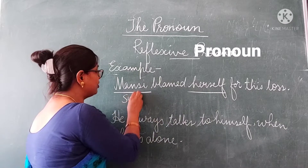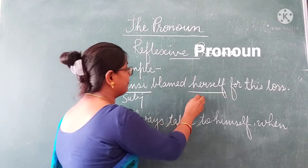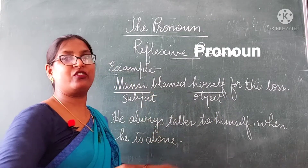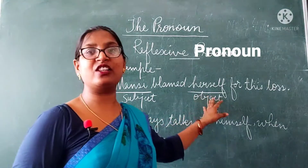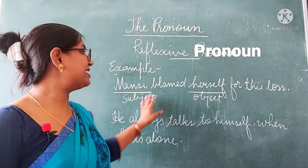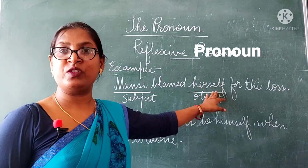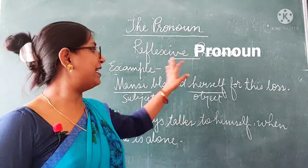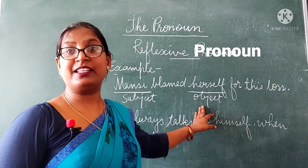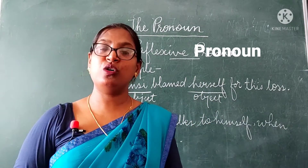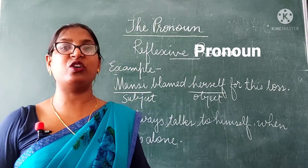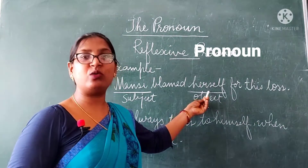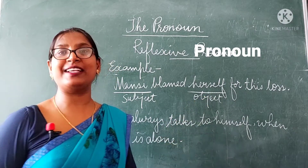Mansi is the subject and "herself" is the object. In this sentence you can see that the subject and the object are the same person. Mansi blamed herself — the action started and was performed by Mansi, and it was also received by Mansi. So the performer and the receiver of the action is the same person in this sentence. Therefore, the pronoun "herself" is a reflexive pronoun.